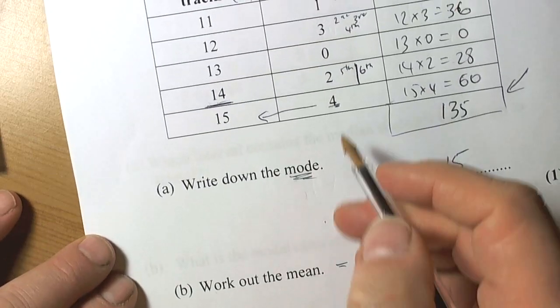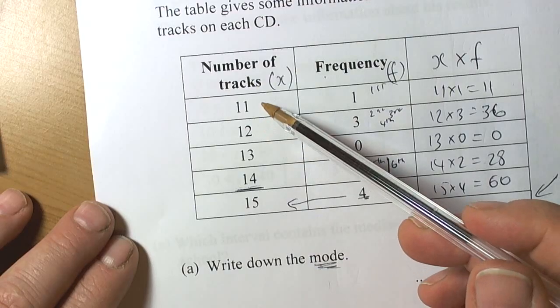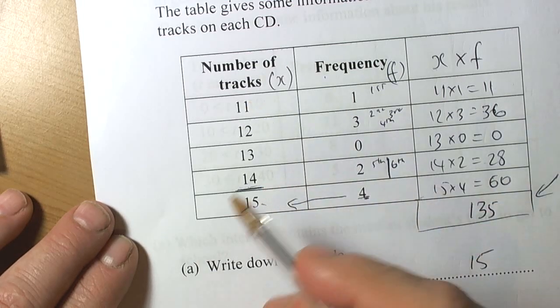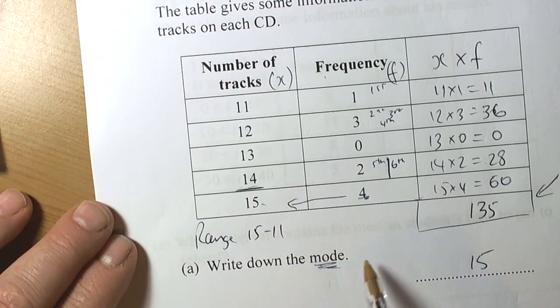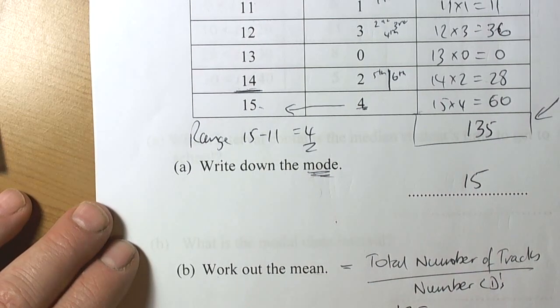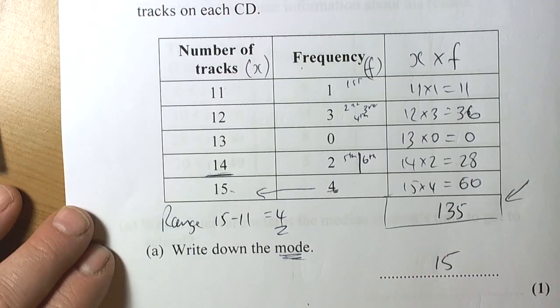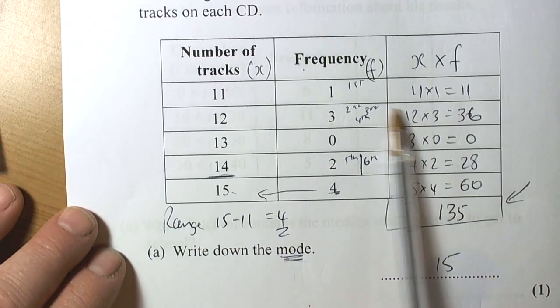If they ask you to calculate the range, just find the highest number of tracks and take away the smallest. The range would be 15 take away 11, which is 4. Stop the video and give yourself a few moments to practice a couple of questions where you're working with discrete data put into a table.